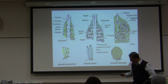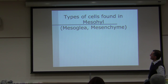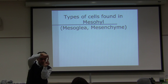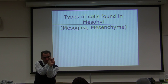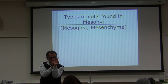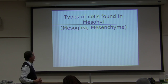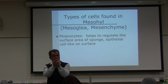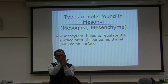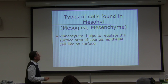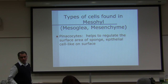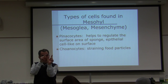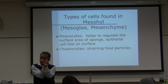Let's talk about the types of cells found in the mesoglia — the mesenchyme or gelatinous layer between the pinacocytes on the outside and the choanocytes on the inside. Pinacocytes help regulate surface area of the sponge — they are epithelial cell-like on the surface. Choanocytes have their flagellum which pushes water; a portion sits in the mesoglial area.